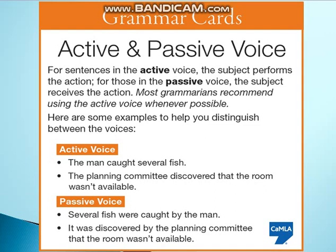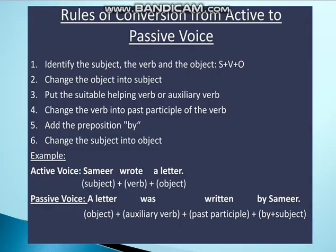'It' is our object — it starts the passive sentence. 'The planning committee' becomes our subject placed after 'by.' We select the helping verb 'was' and use the third form of the verb 'discovered.' Active voice: 'The planning committee discovered that the room wasn't available.' Passive voice: 'It was discovered by the planning committee that the room wasn't available.'